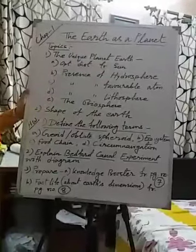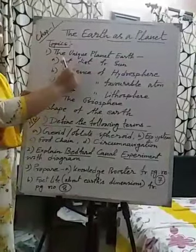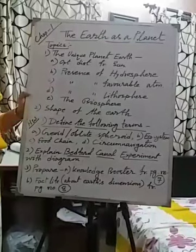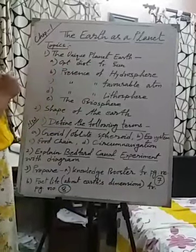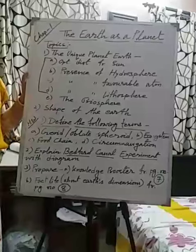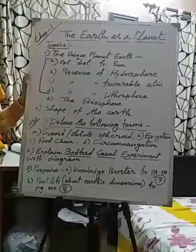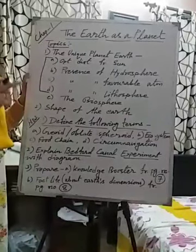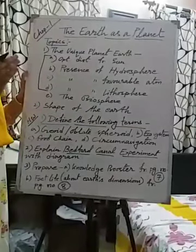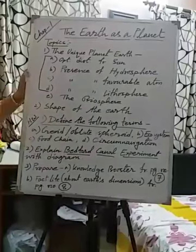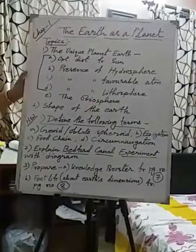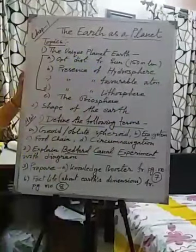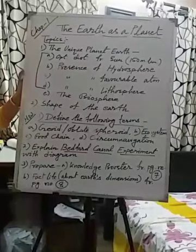Topic: The Earth as a Planet — Unique Planet. The Earth is a planet, as all of you know. Size-wise it is the fifth largest planet. But it is also called a unique planet. Why? Because of four reasons. First of all, optimum distance from the Sun. You know the Sun is the source of heat and energy, and our Earth's distance from the Sun is optimum — neither too close nor too far. On average, we can say it is 150 million kilometers. That's why our Earth is neither too hot nor too cold.